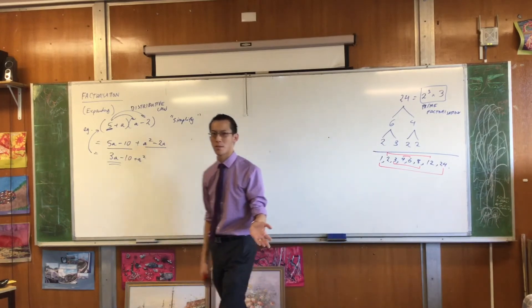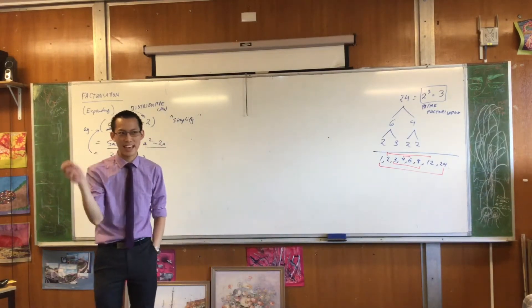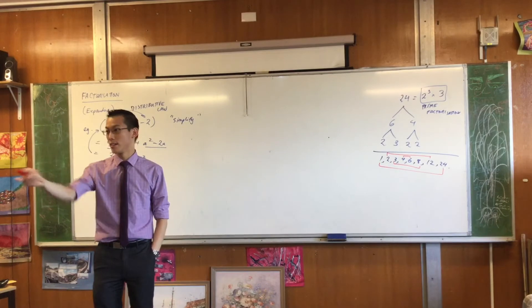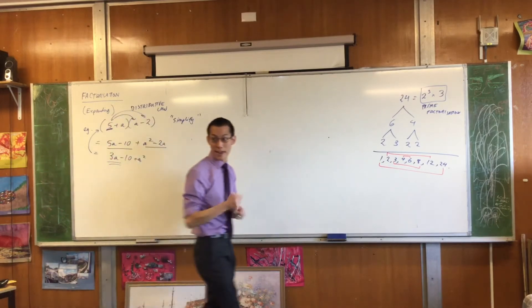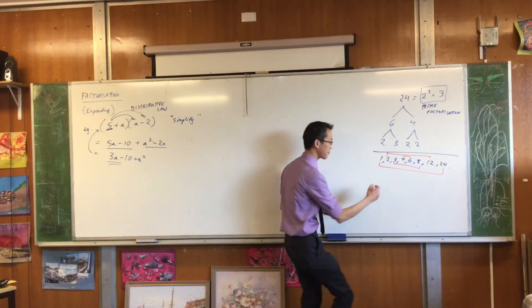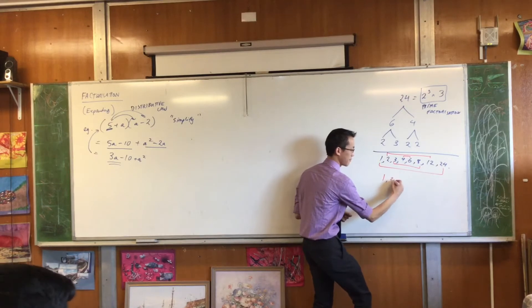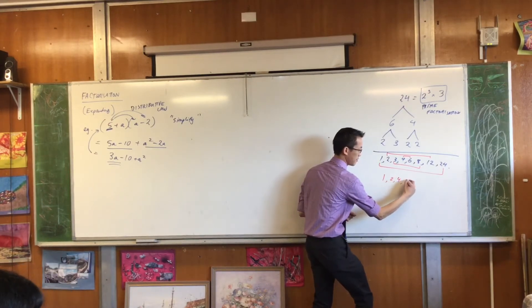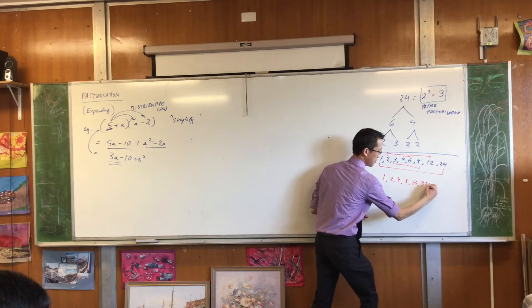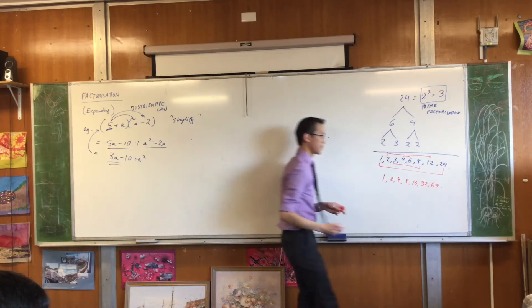Now immediately you've all noticed something if you just listen carefully to what I just said. 64. Jasmine, can you tell us the factors of 64? Have you got them there? Yeah. 1, 2, 4, 8, 16, 32, and 64.